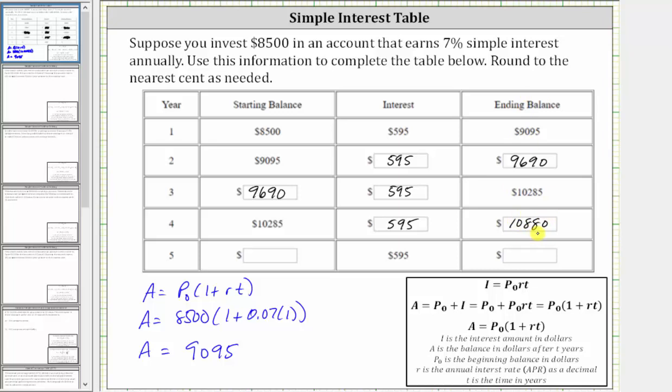The ending balance in year four is the beginning balance in year five. Again, to find the ending balance in year five, we take the beginning balance, add the interest, at least $10,880 plus $595 is $11,475.